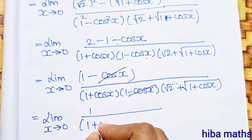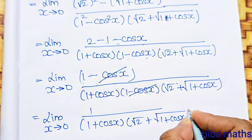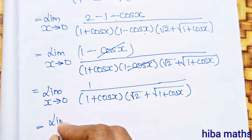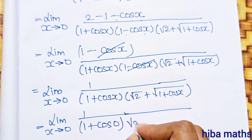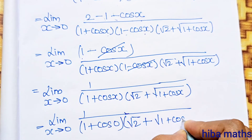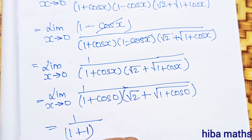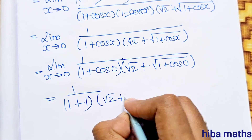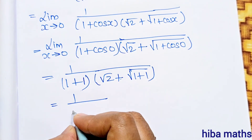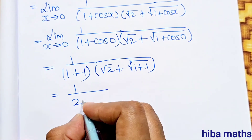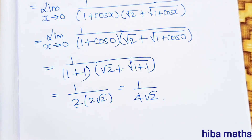So the limit becomes: limit x turns to 0 of 1 by (1 + cos x) into root of (2 + root of (1 + cos x)). Substituting x equals 0: cos 0 is 1, so we get 1 by 2 into root 2 plus root 2, which is 1 by 2 into 2 root 2, equals 1 by 4 root 2. This is the answer. Thank you so much for watching.